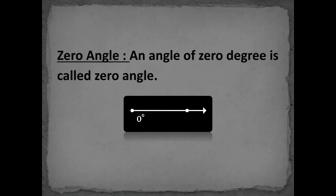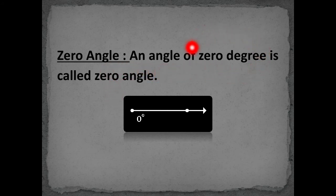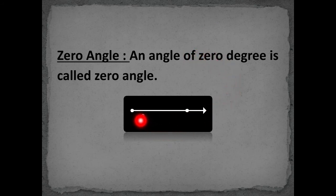The next angle is the zero angle. An angle whose measure is 0 degrees is called a zero angle. In a zero angle, both arms overlap each other.